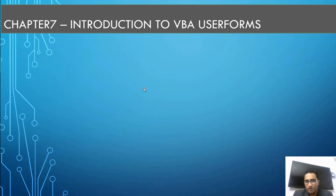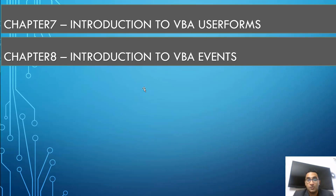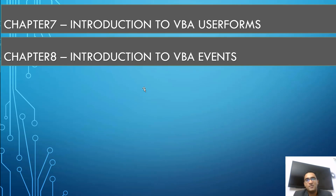We'll also cover UserForm events — why we need them, the UserForm Initialize event, and the difference between OnChange and AfterUpdate events. Then we talk about VBA events: self-triggered macros. Instead of only firing macros by clicking a button, you can trigger code when a workbook opens, when something changes in a pivot, to send an email at exactly 5 p.m., to auto-create a backup when you close a workbook, or to create a change tracker log. We'll also address challenges with cascading event conditions.